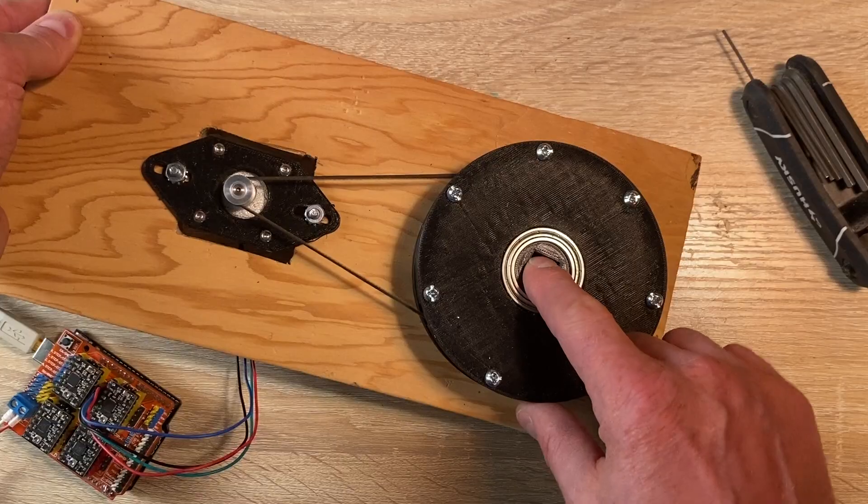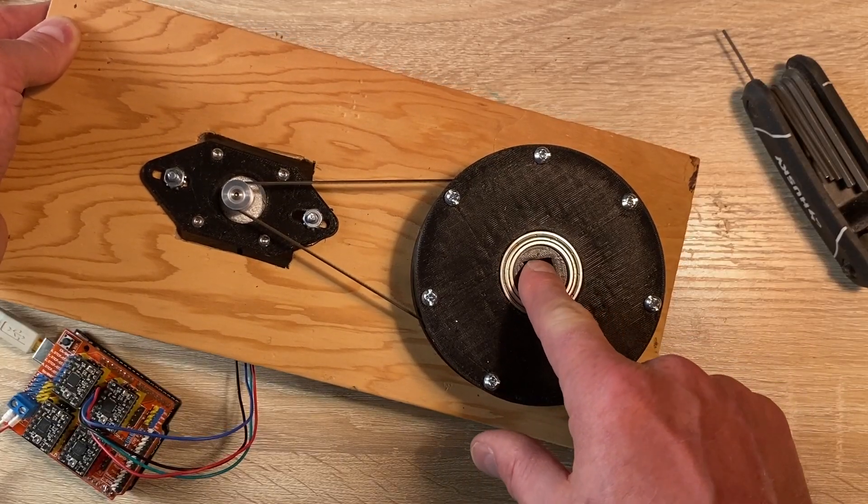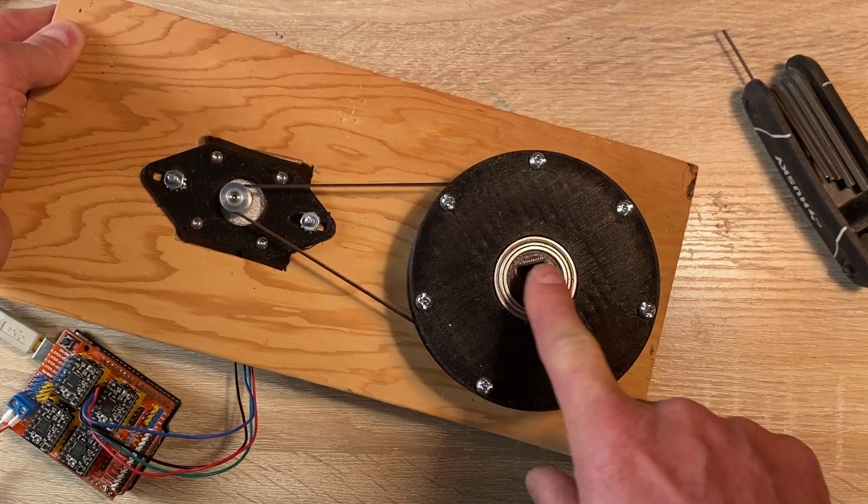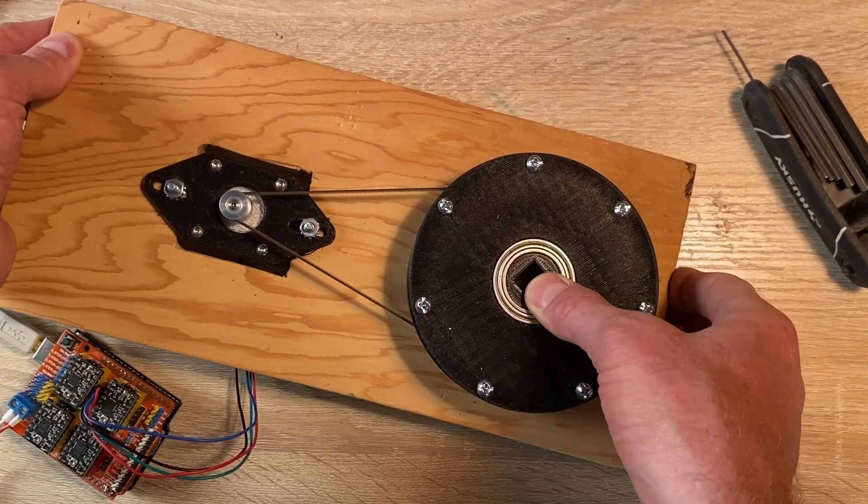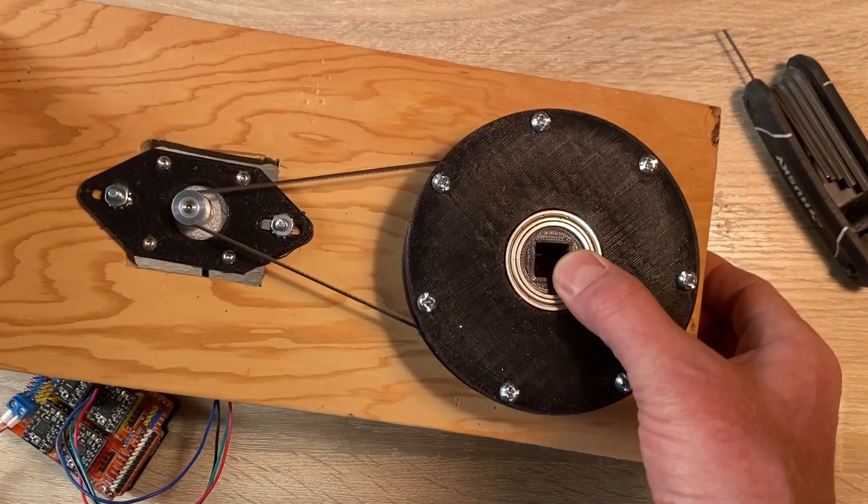Instead of gears, there are these ball bearings. I have a little bit of torque right here, but if I jam my finger in, I can pretty much hold it still, and it's just because the ball bearings are slipping.